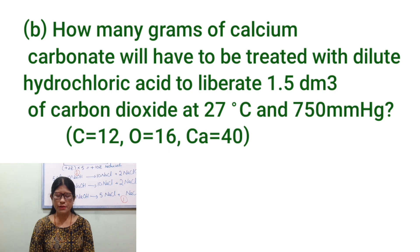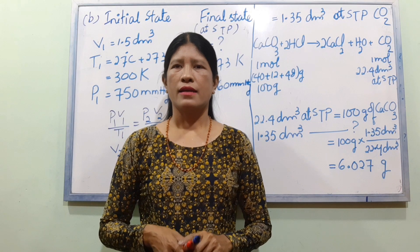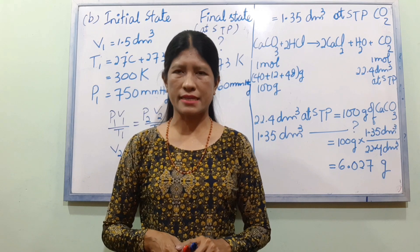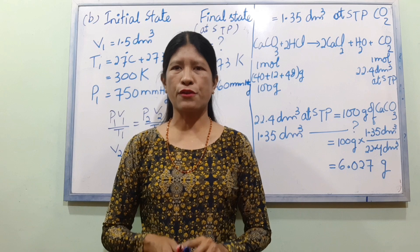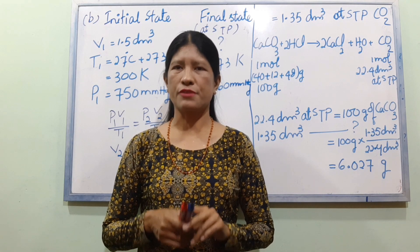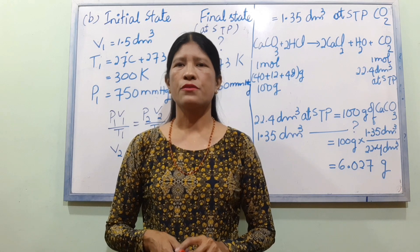How many grams of calcium carbonate will have to be treated with dilute hydrochloric acid to liberate 1.5 dm³ of carbon dioxide at 27 degrees Celsius and 750 mmHg? The volume is 1.5 dm³, temperature is 27 degrees Celsius, and pressure is 750 mmHg.